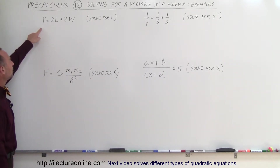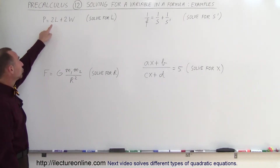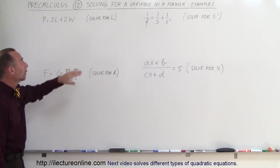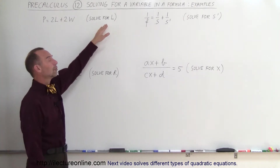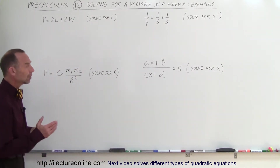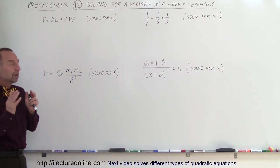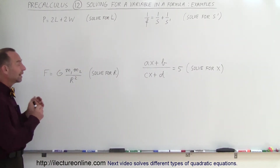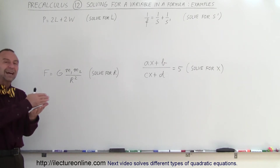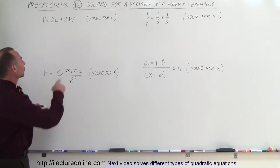On the first one, we have the perimeter of a rectangle: P is equal to 2 times the length plus 2 times the width, and we're supposed to solve for L, the length. We use the same technique — move all the terms that have the variable you're looking for to the left side, and everything else to the right side.